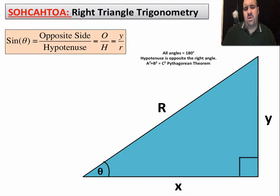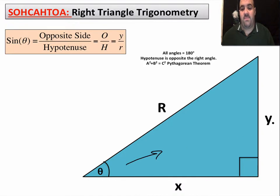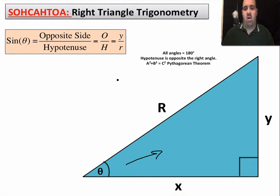Looking at SOH-CAH-TOA now: the sine of theta — theta is an angle, a Greek letter that simply means angle. The sine of this angle equals the opposite side over the hypotenuse. The opposite side in this case is y, and the hypotenuse across from the right angle is r. So sine of theta equals y divided by r.